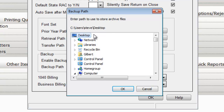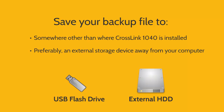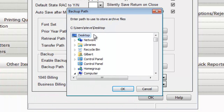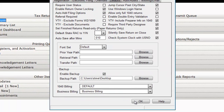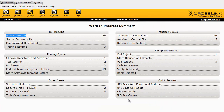However, it's recommended that you save your backup files on a drive other than the one where CrossLink 1040 is installed, and preferably on an external storage device that's separate from your computer. Click OK to save the backup path, and then OK to save your settings.